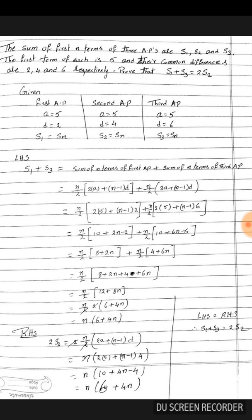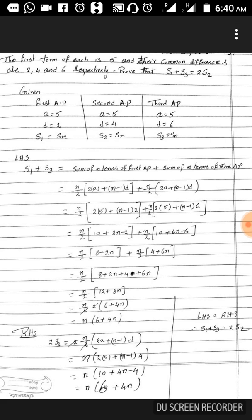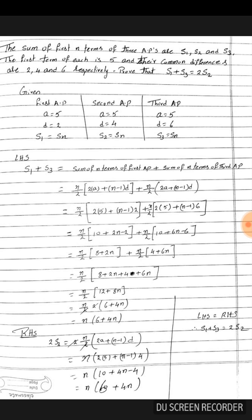So the sum of n terms formula is n by 2 times 2a plus n minus 1 into d. For the sum of n terms of the first AP, 2a equals 2 into 5 plus n minus 1, d is 2, plus n by 2, 2 into 5 since here also a is 5, and n minus 1 into 6 since d is 6 here.